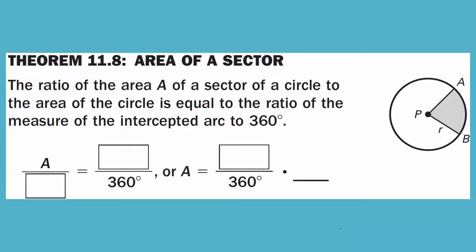Theorem 11.8: Area of a Sector. The ratio of the area A of a sector of a circle to the area of the circle is equal to the ratio of the measure of the intercepted arc to 360 degrees. The formula is: A over pi r squared equals arc measure over 360 degrees. Cross-multiplying to isolate A gives: A equals the measure of arc AB over 360, times pi r squared. Think of it as part over whole — part of the arc measure over the entire circle — multiplied by pi r squared.